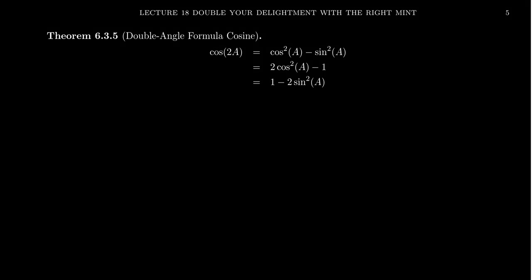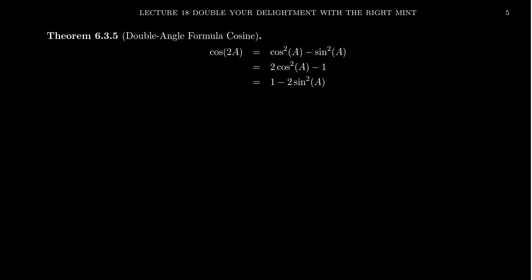In this video, I want to talk about the double angle formula for cosine. It turns out there are actually three versions of the double angle formula for cosine. The first of which we're going to talk about right here, but there are some consequences that are often paired with the double angle formula, so I want to talk about each and every one of those.